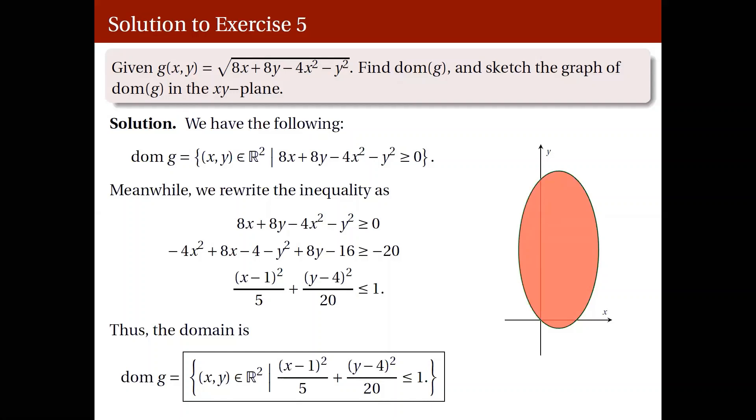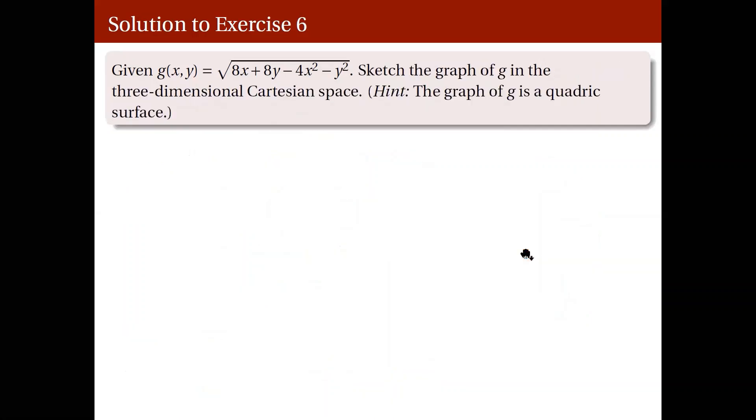Next, let's take a look at the sketch of the graph of g in 3D. There's a hint. This is supposedly a quadric. Well, maybe a full quadric, maybe a half quadric. By half, we mean maybe just a portion of the quadric.